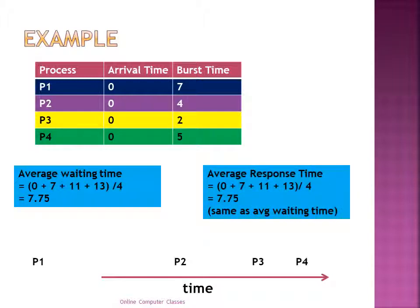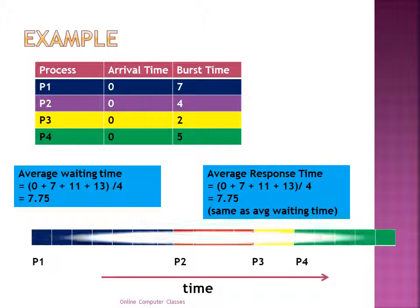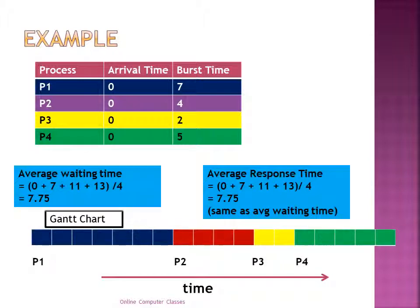The average response time is also the same in this example, because all processes have an arrival time of 0, so response time equals waiting time. Looking at the Gantt chart: P1 starts immediately and gets the CPU first, then P2 gets the CPU after P1 completes, then P3 gets the CPU after P1 and P2 complete, and finally P4 gets the CPU last. This is an example of FCFS scheduling.